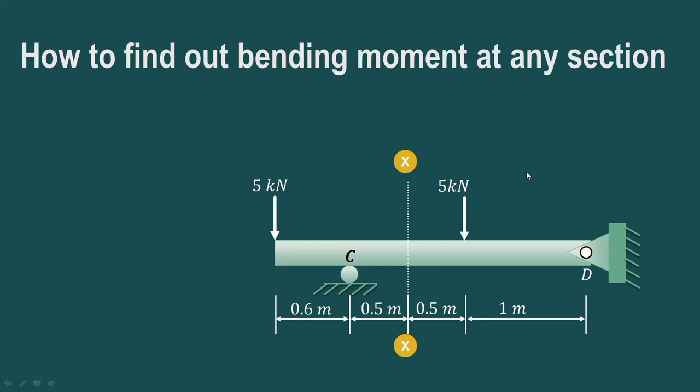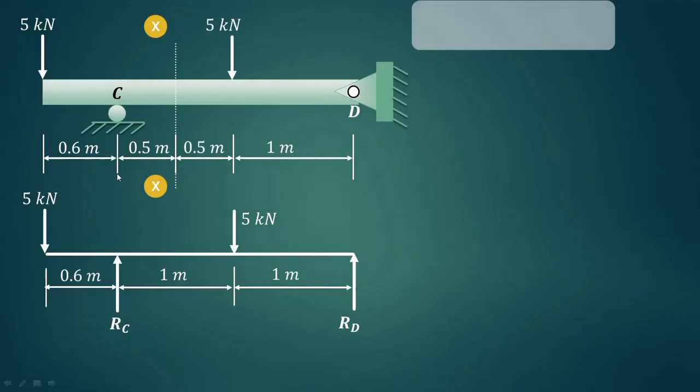In this video we'll try to understand how to find out bending moment at any section XX as shown. The arrangement of the beam is: we are having the roller support at point C and hinge support at point D, and vertical loading of 5 kN each as shown in the figure. Now as there is only vertical loading, we will not consider the horizontal reactions.